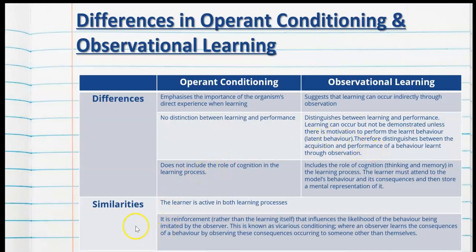Let's talk about the similarities between operant conditioning and observational learning. The learner is active in both learning processes, and it is reinforcement rather than the learning itself that influences the likelihood of the behaviour being imitated by the observer. This is known as vicarious conditioning, where an observer learns the consequences of a behaviour by observing these consequences occurring to someone else rather than themselves.